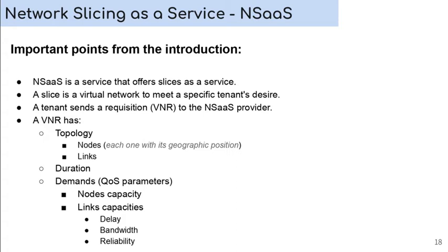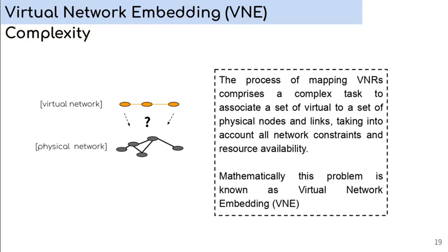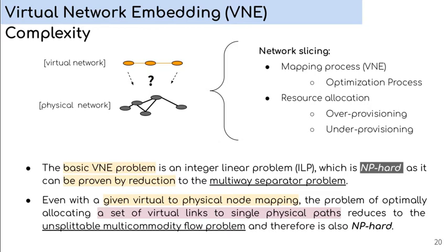The process of mapping VNRs comprises a complex task to associate a set of virtual to a set of physical nodes and links, taking into account all network constraints and resource availability. Mathematically, this problem is known as Virtual Network Embedding, or VNE. The basic VNE problem is an integer-linear problem, which is NP-hard as it can be proven by reduction to the multi-way separator problem. Even with a given virtual to physical node mapping, the problem of optimally allocating a set of virtual links to a single physical path reduced to the unsplittable multi-commodity flow problem, and therefore, is also NP-hard.